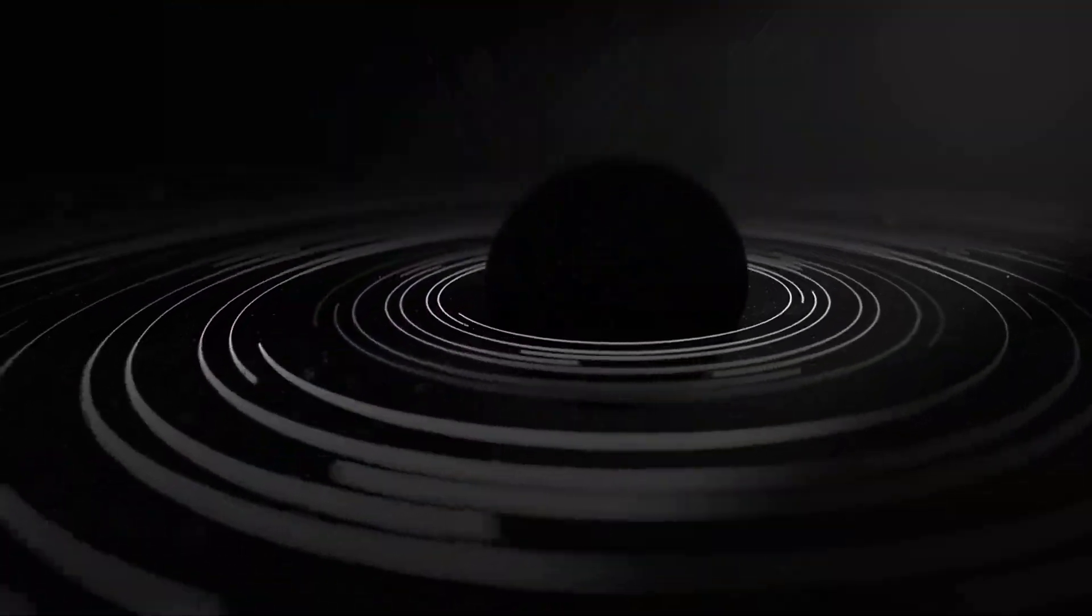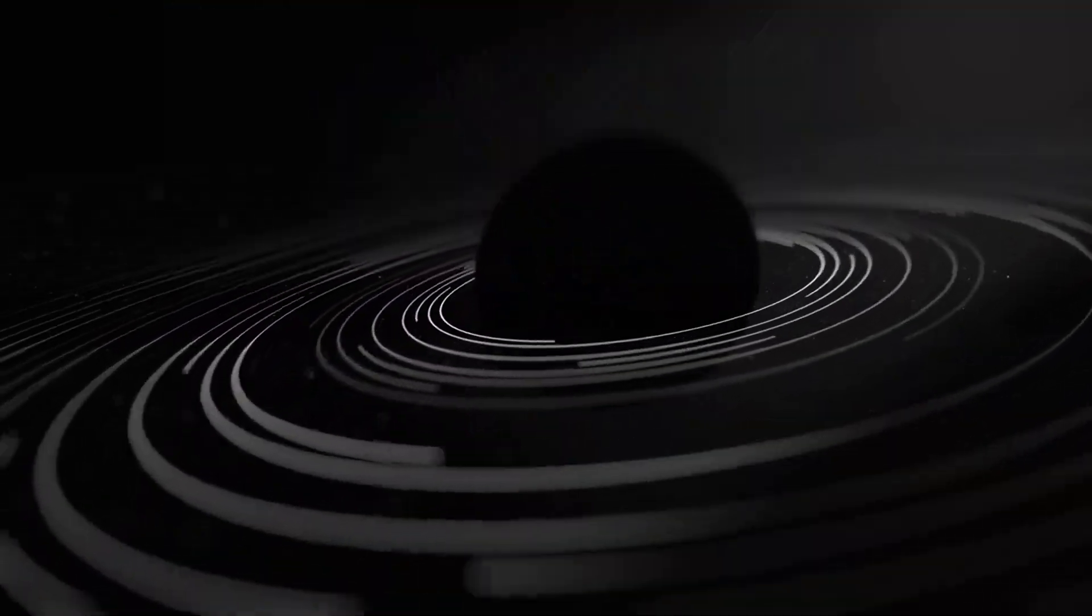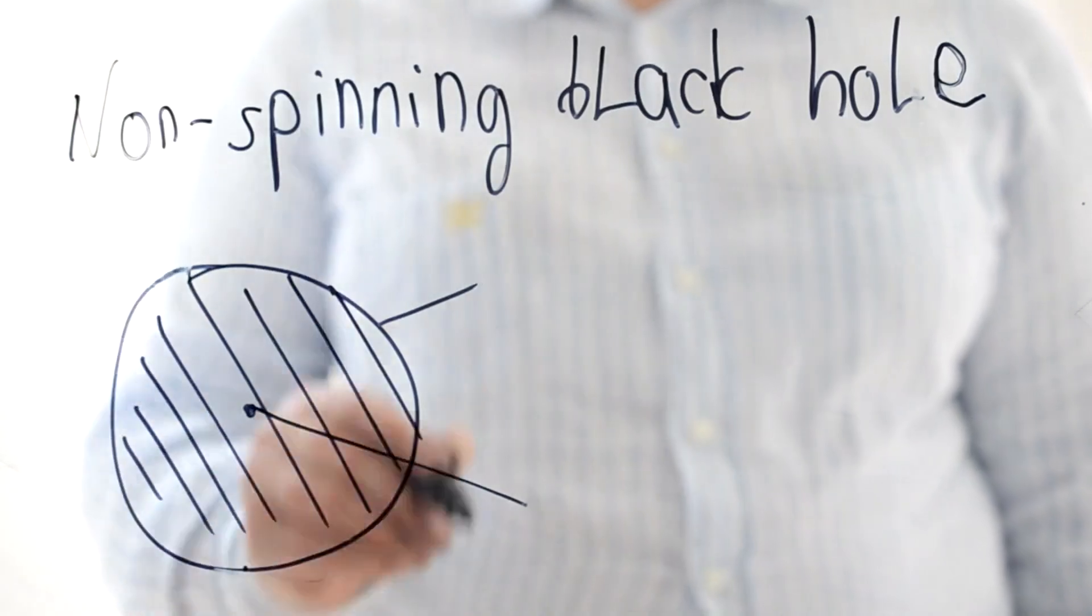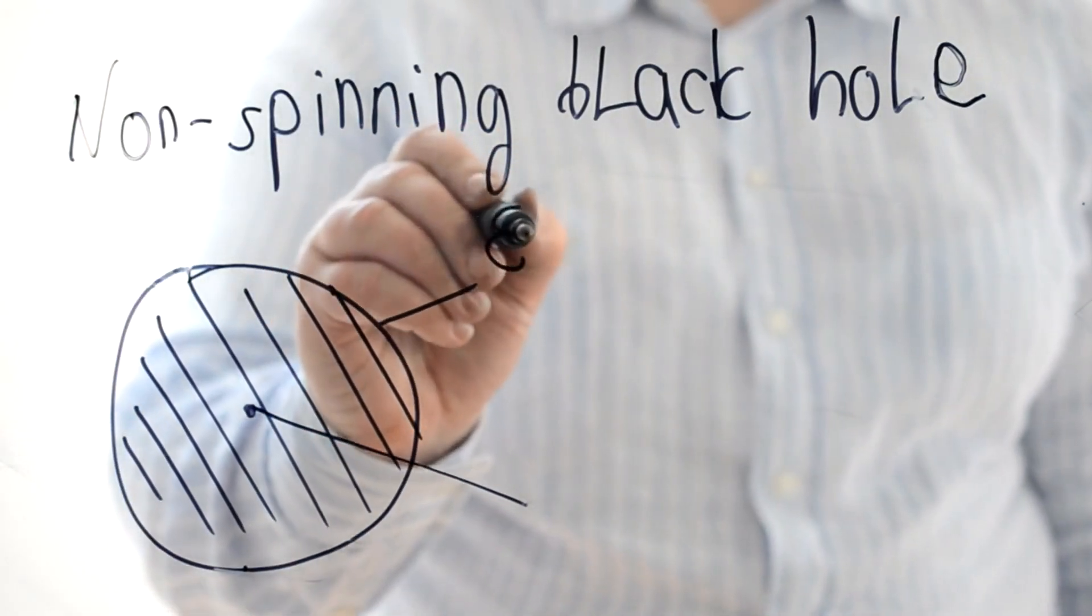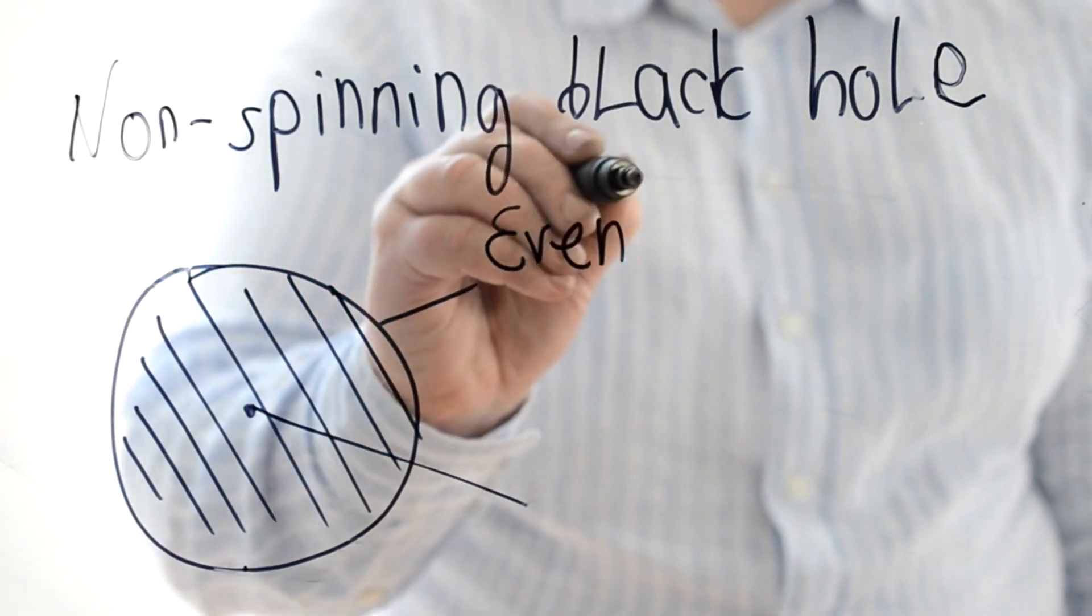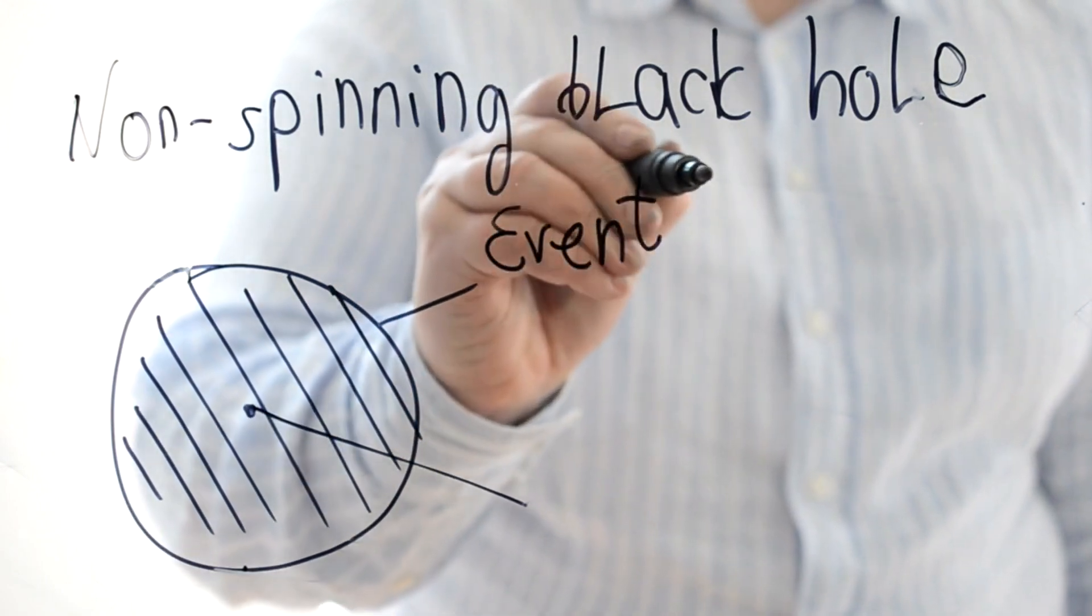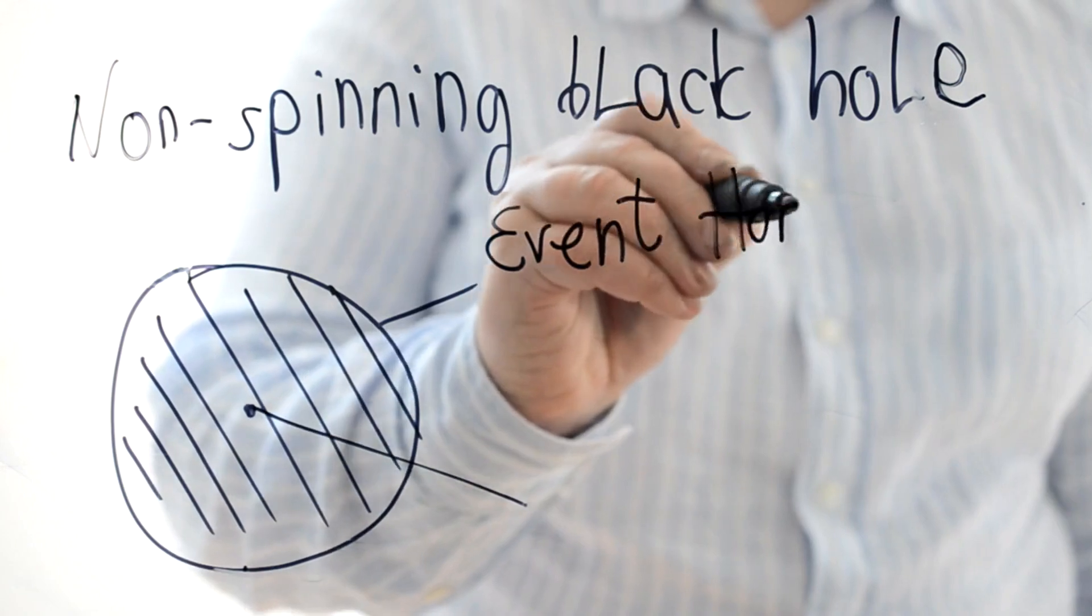Detecting black holes has always been a formidable challenge. Unlike stars, black holes do not emit light, making them invisible to traditional telescopes. Instead, their presence is inferred through the effects they have on their surroundings. Scientists measure the size and spin of black holes by observing the behavior of nearby matter and the radiation emitted by particles accelerated to extreme speeds as they fall into the black hole.